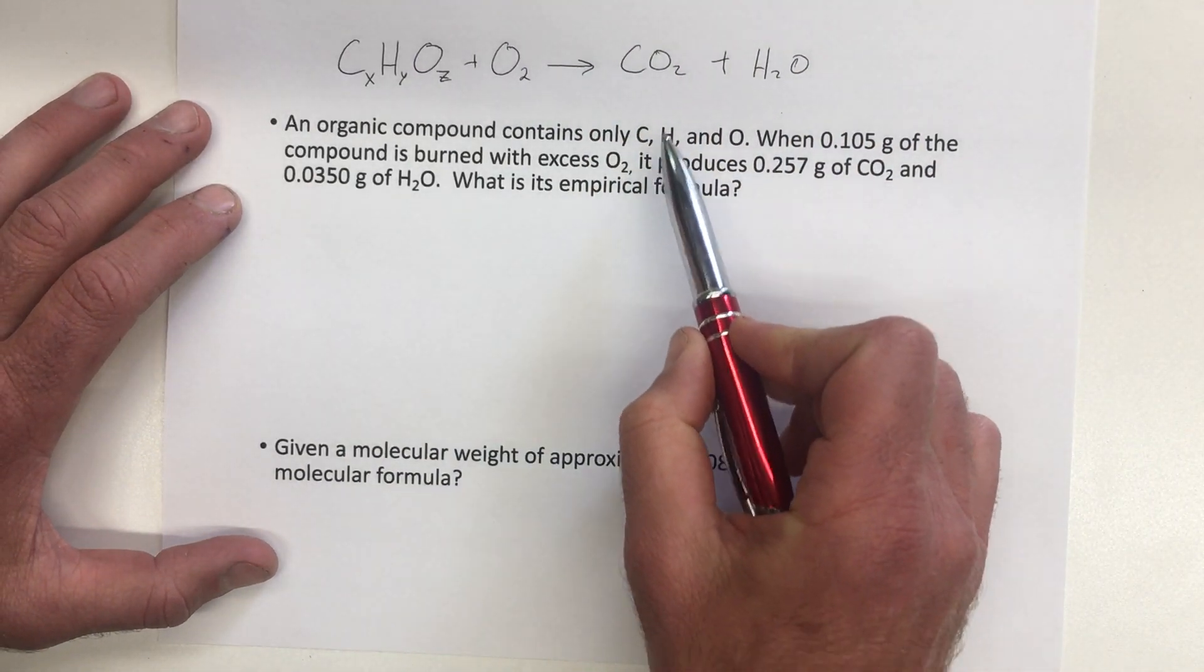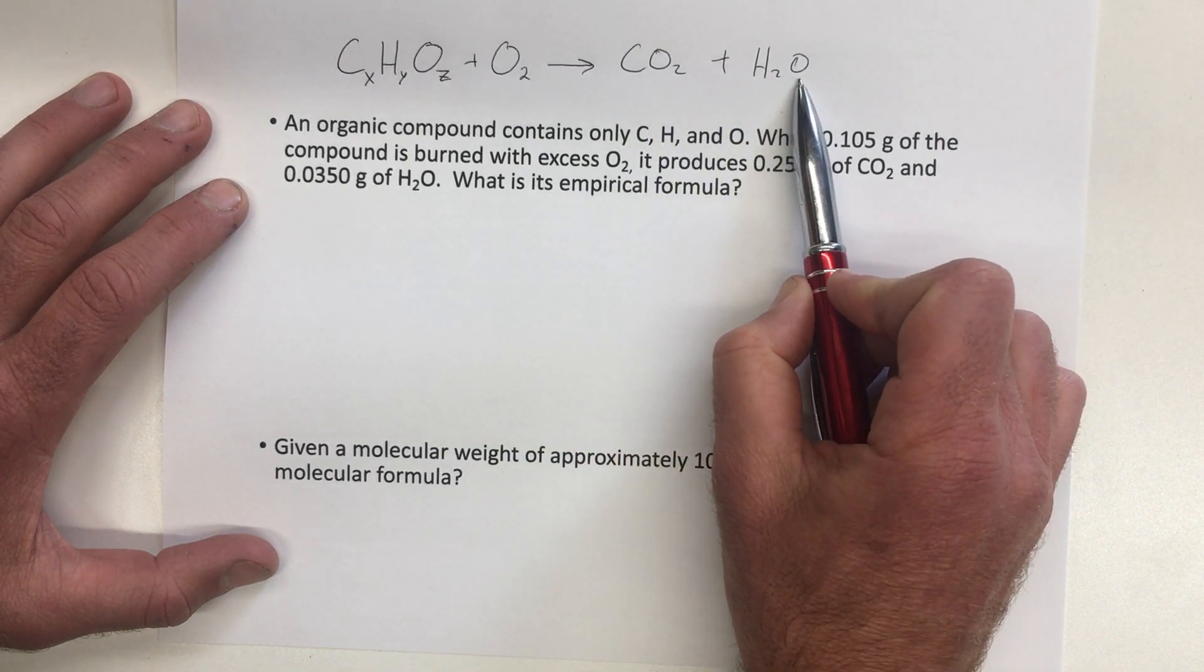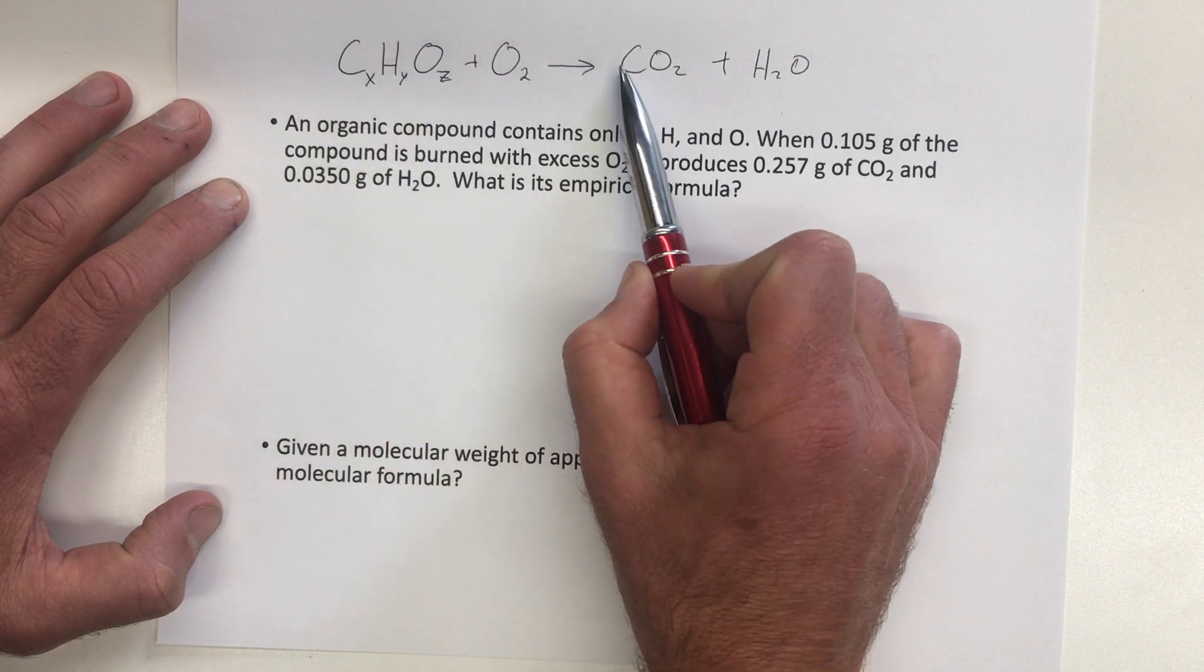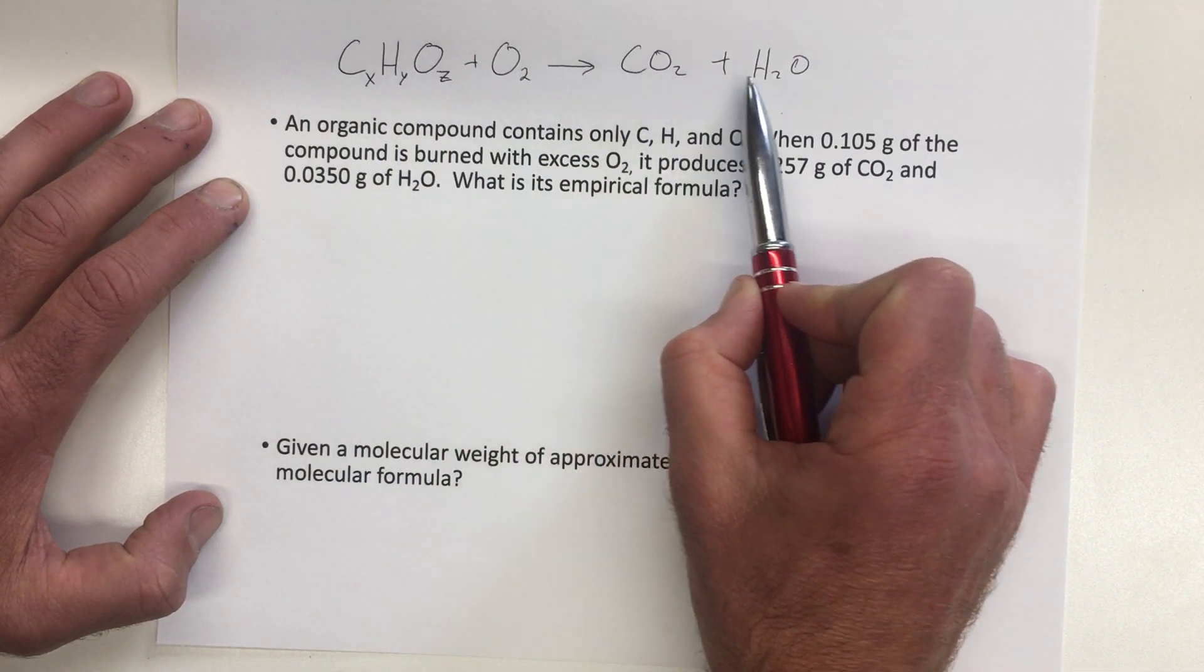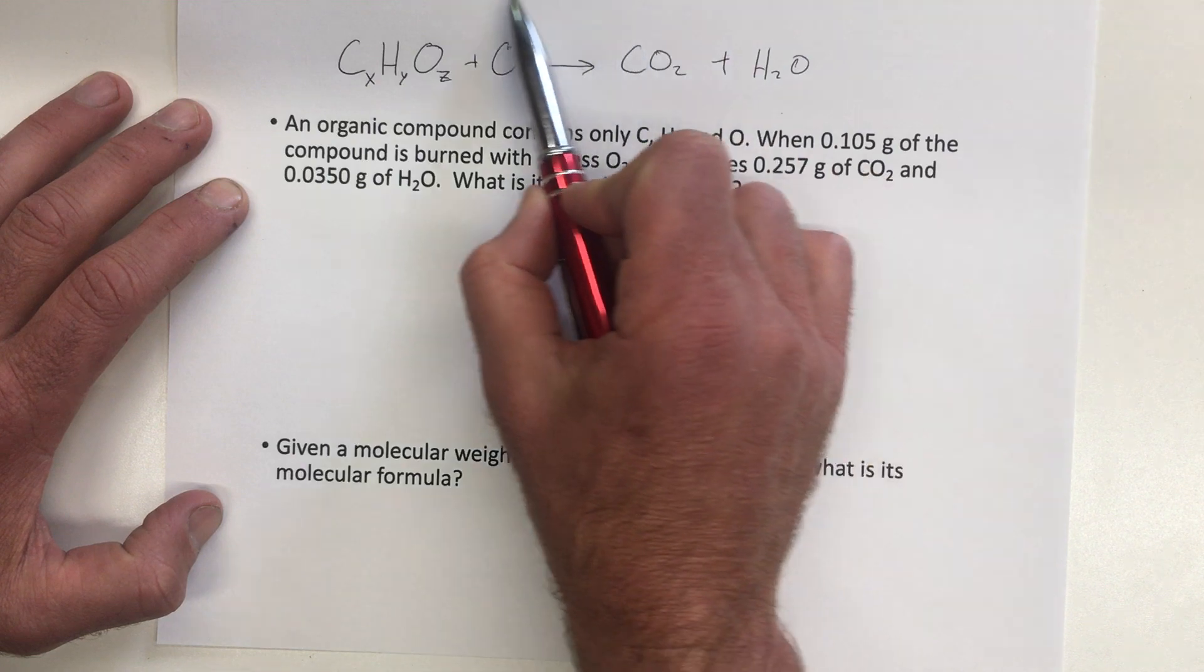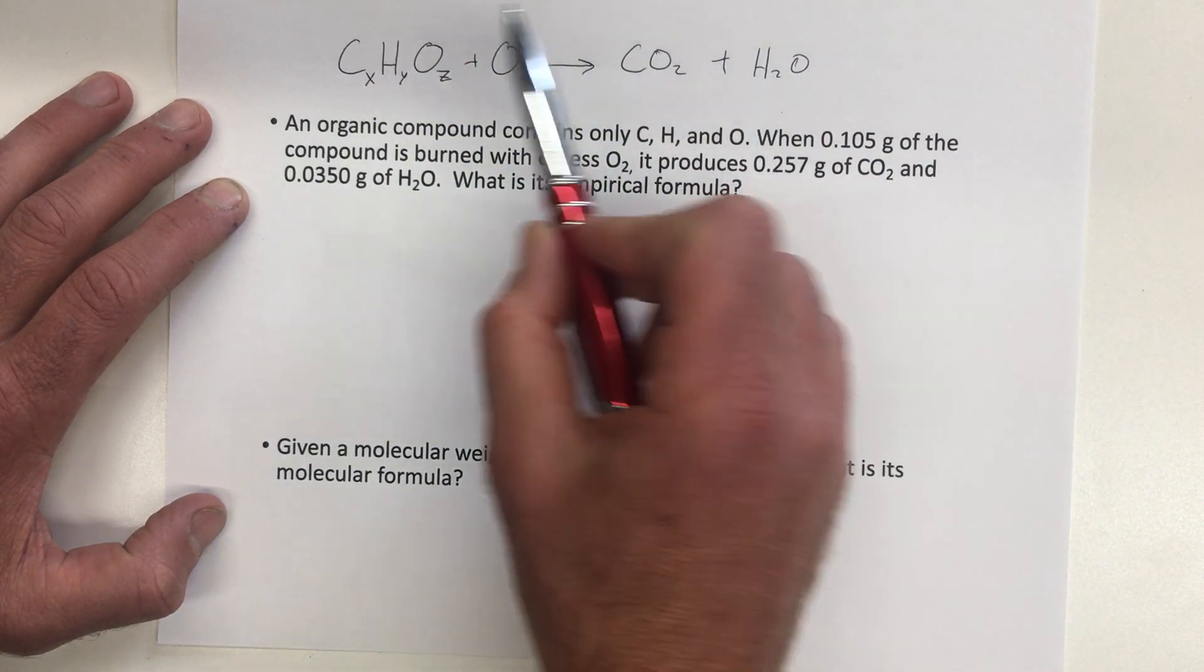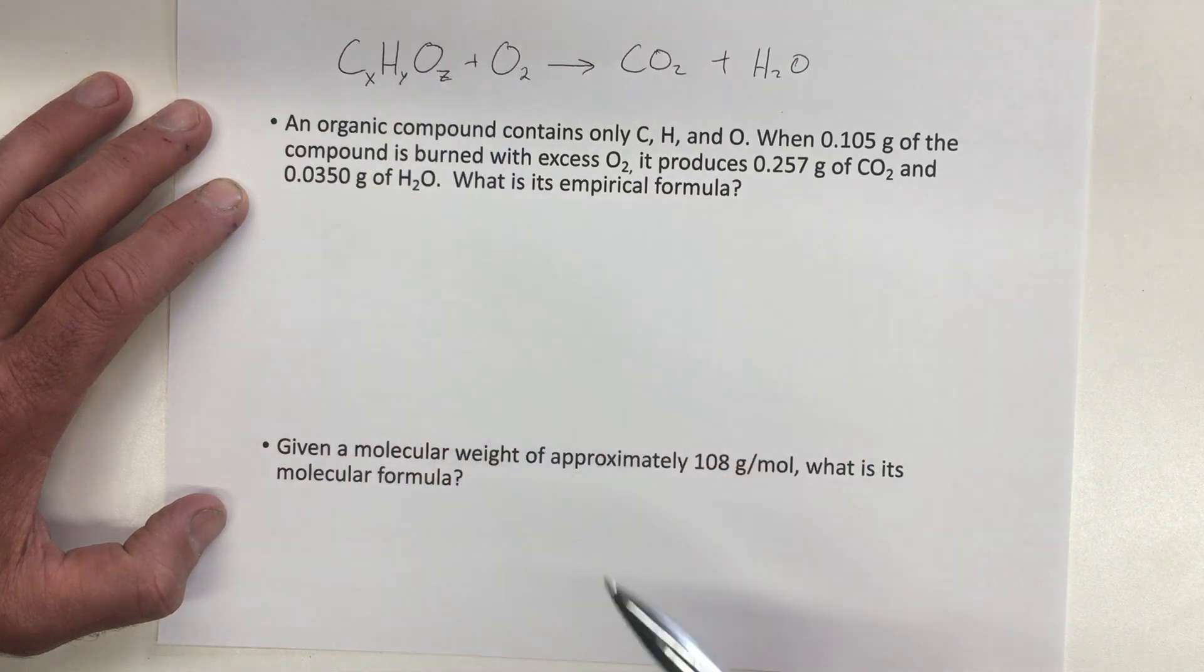And then by finding the mass of carbon dioxide and water that are produced, we can go back and figure out how much carbon was in the original hydrocarbon based on how much carbon dioxide was produced, and how much hydrogen was in the original compound based on how much water is produced. And we can use that to figure out the mole ratio of our unknown compound.